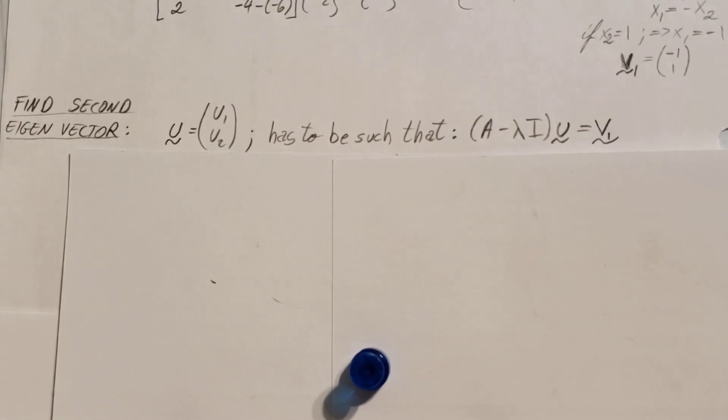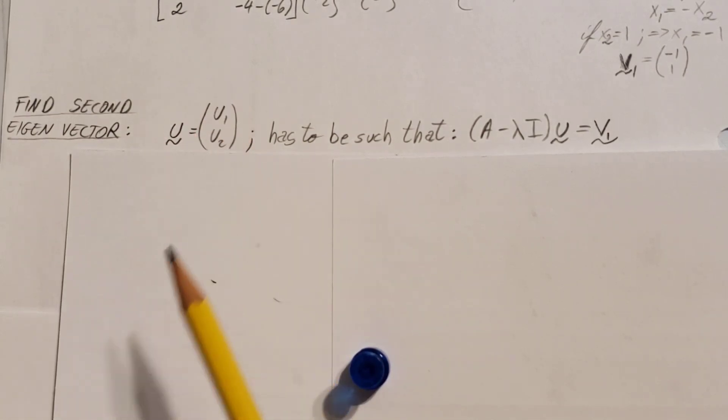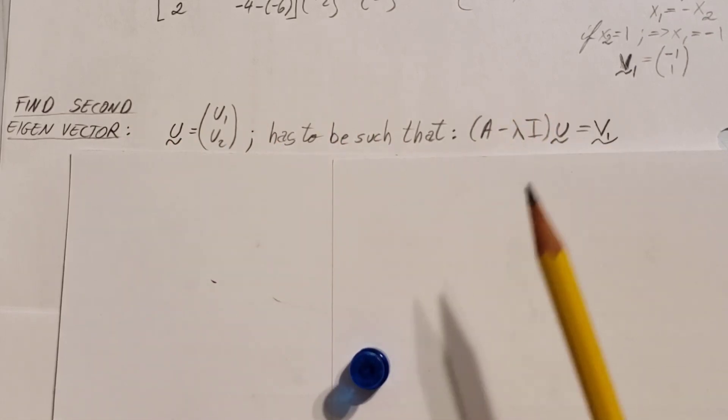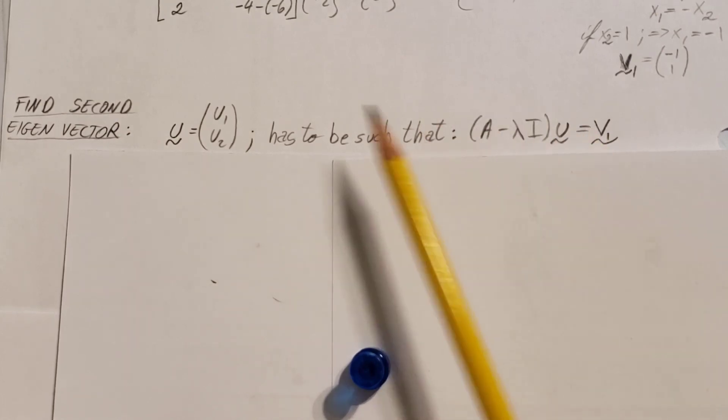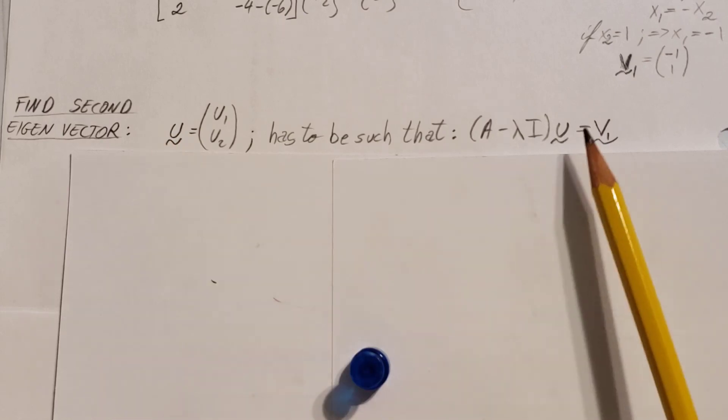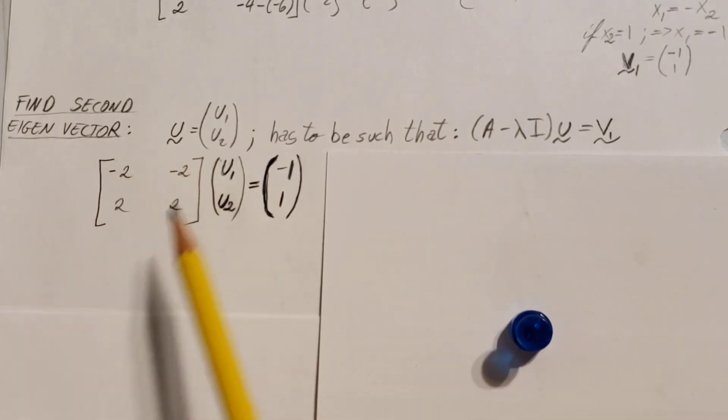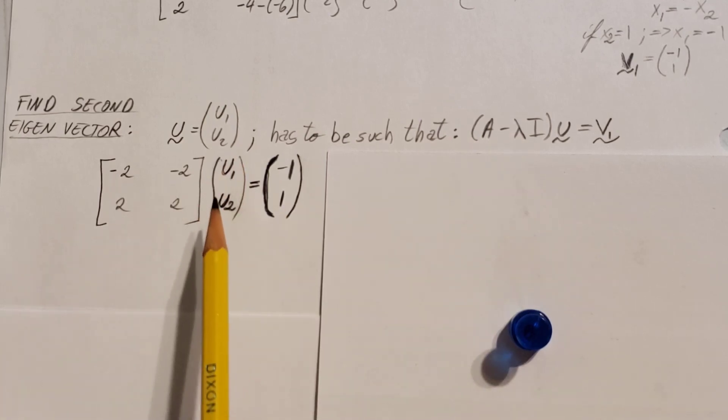So we're going to have to find a general eigenvector for our second one. We're going to call it u vector equals u1, u2, and it has to be such that it will satisfy this equation right here: A minus lambda I times the u vector that we just set up here equal to v1, our vector that we found right here. So here it is: my A vector with the lambda adjusted accordingly, u1, u2, and my v1 from negative 1 and 1.